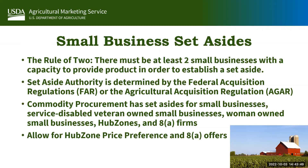Now let's talk about small business set-asides. To establish any set-aside we must have the rule of two. According to FAR section 19, there must be at least two small businesses with the capacity to provide a product in order to create a set-aside. All set-aside authority is determined by the FAR or the Agricultural Acquisition Regulation, commonly referred to as AGAR. Currently commodity procurement has set-asides for small businesses, service-disabled veteran-owned small businesses, woman-owned small businesses, HUBZones, and 8(a) firms.